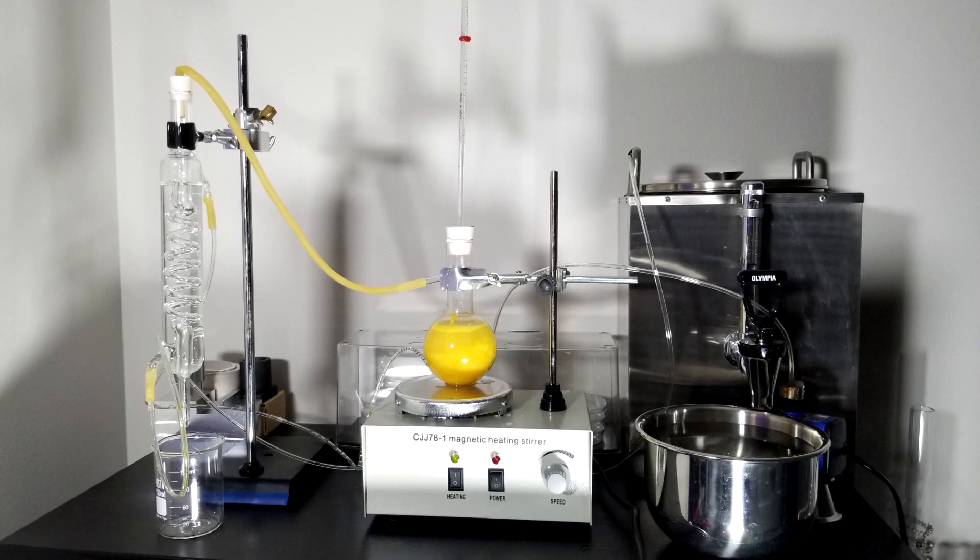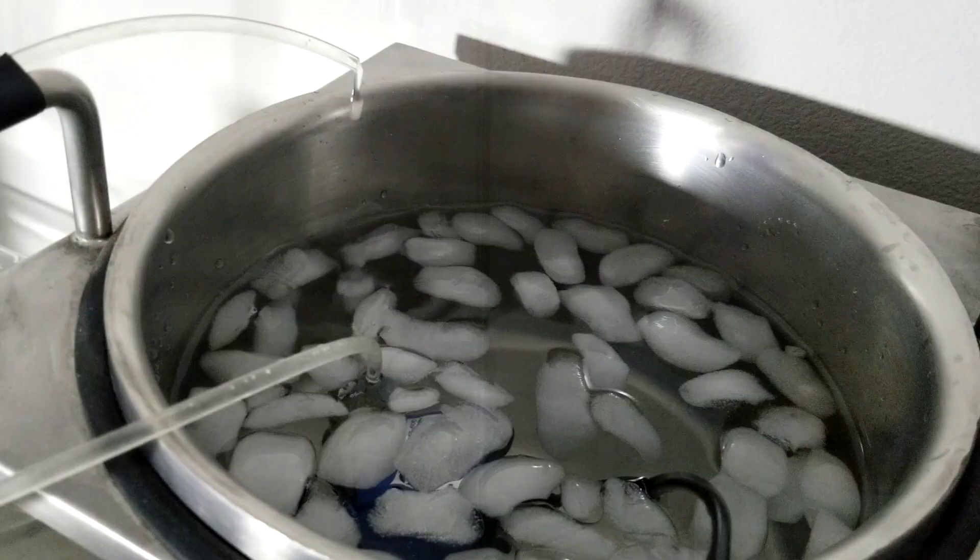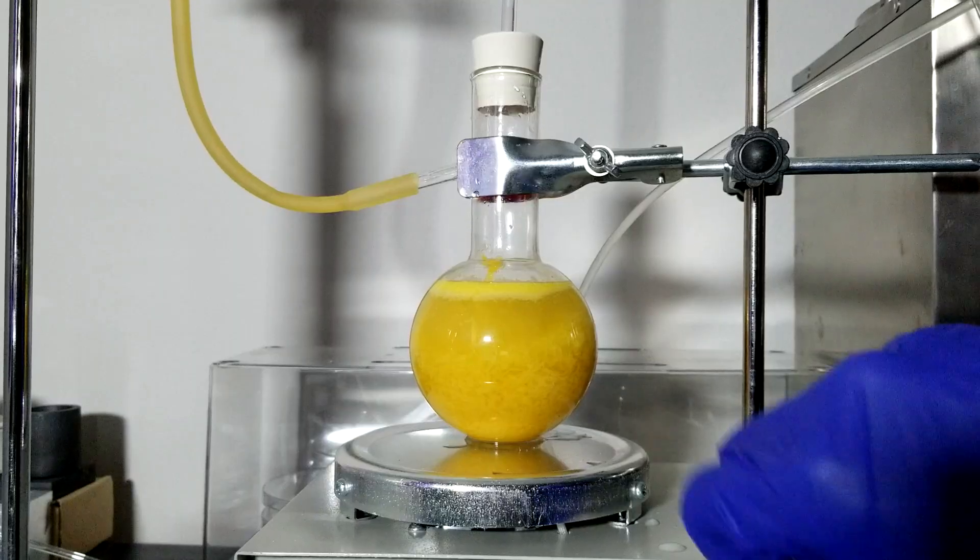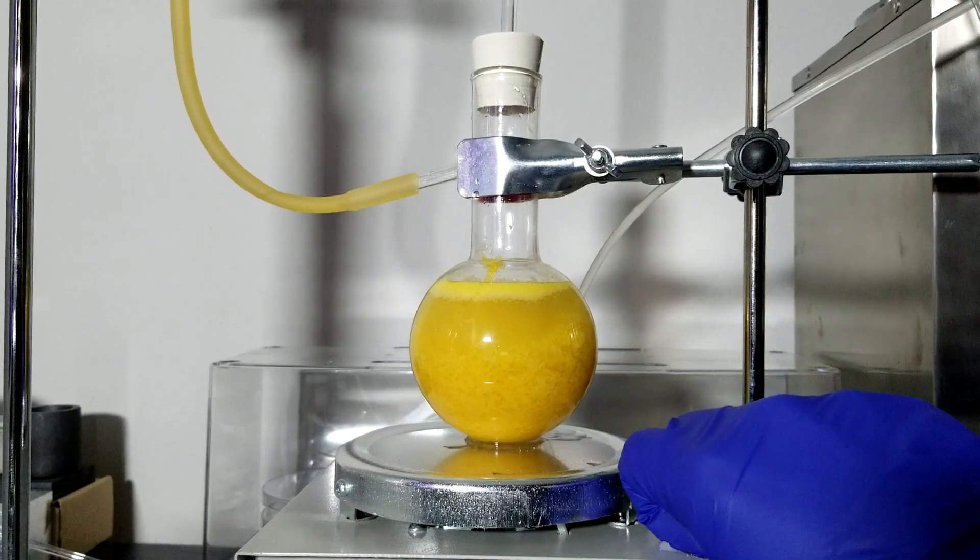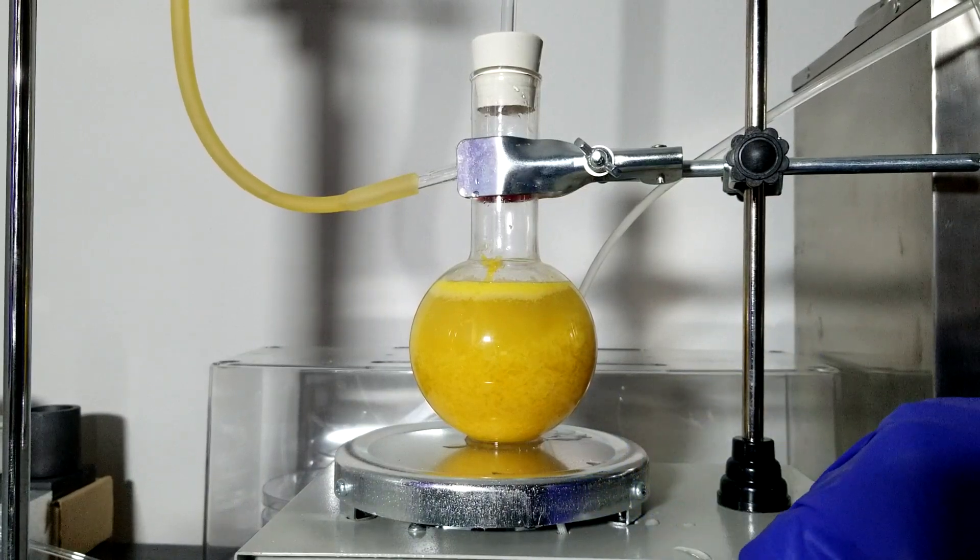Here is the overall setup now, and the condenser is now circulating with icy water. I turned on the heater and magnetic stirrer and started to heat them up past the boiling point of water to create steam.